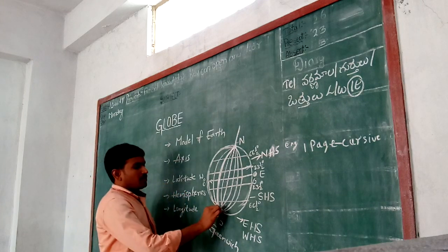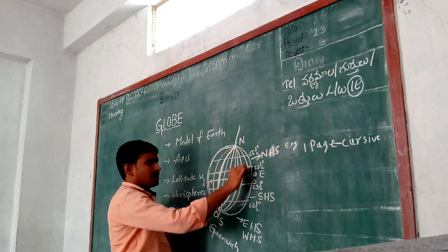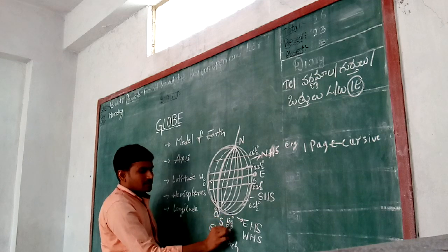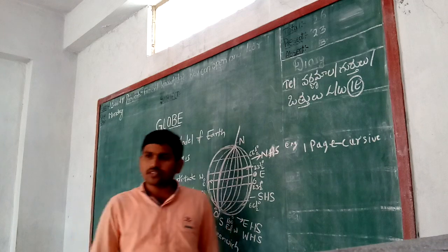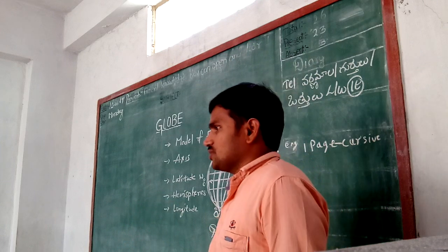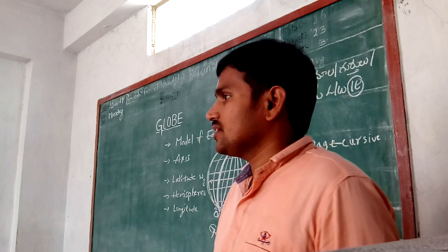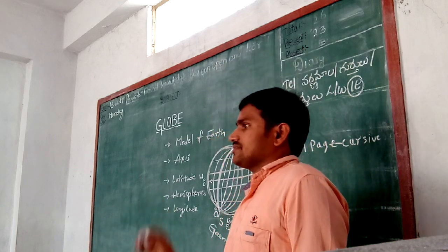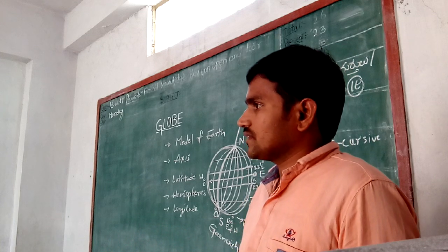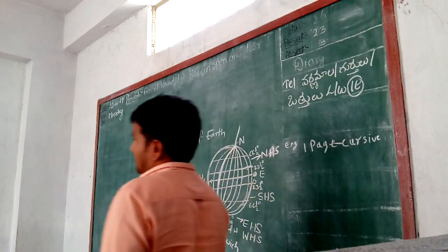Another important longitude is 180 degrees east and west longitude. It is called IDL. IDL stands for International Date Line. Not a deadline — International Date Line.